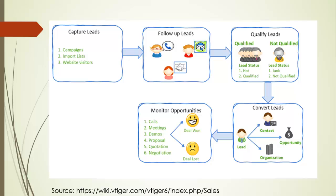Once you have the lead capturing finished, you do the follow-ups — you perform activities, you call them, you send them an email, or you arrange a meeting with them by configuring the to-do lists or events inside the vTiger CRM. Once you follow up the leads, if it is qualified, you can change the status of the lead as hot and qualified, or if it is not qualified, you can change the lead status as junk.